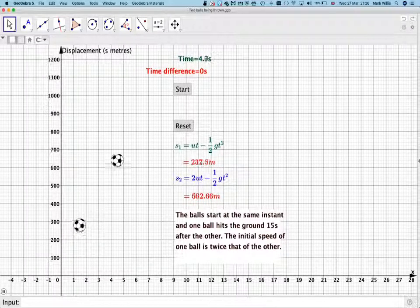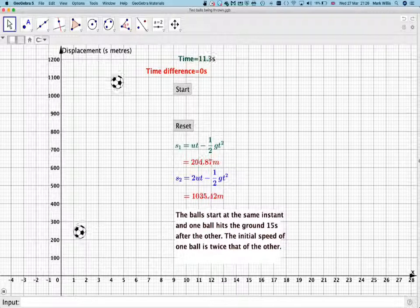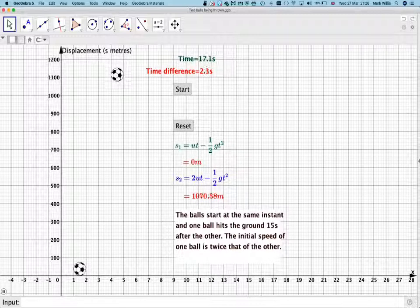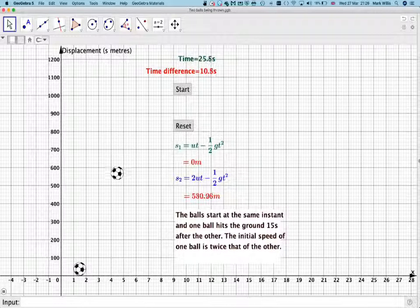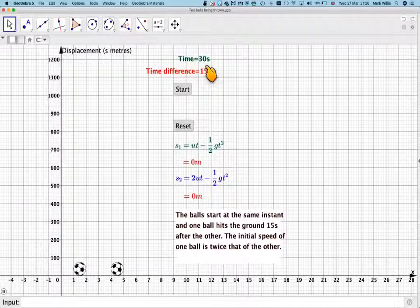The faster one is going up much faster. Obviously, the slower one will hit the gravity, and then they'll start to come back down. And then the other one will come back down. And then we can see now that the difference in time is about 15, but the actual time taken is 30.